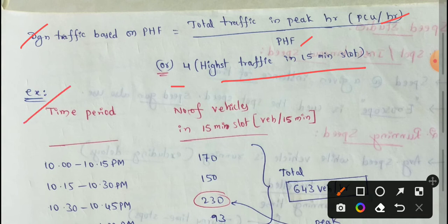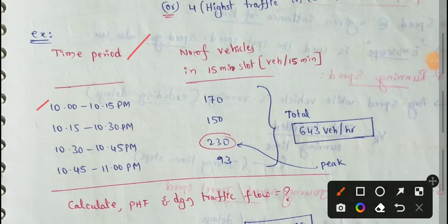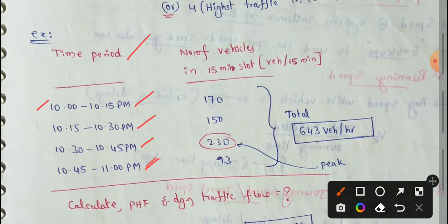Example problem: I have given data for a time period of one hour — 10 p.m. to 11 p.m. — divided into 4 slots every 15 minutes: 10:00 to 10:15, 10:15 to 10:30, 10:30 to 10:45, and 10:45 to 11:00. The first slot (10:00–10:15) has 170 vehicles per 15 minutes. Next, 10:15 to 10:30 has 150 vehicles. Then 10:30 to 10:45 has 230 vehicles. The 4th slot has 93 vehicles per 15 minutes.